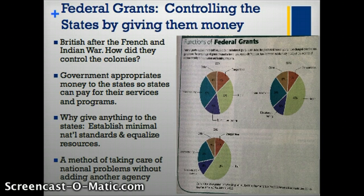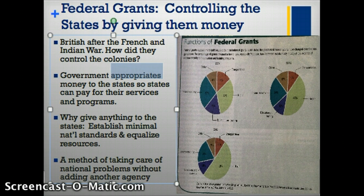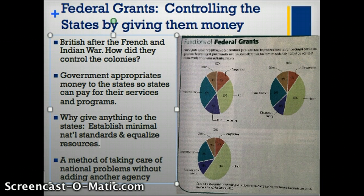The reason why government will give money to the states is because it is important that the government make sure states can pay for services and programs. The government appropriates — meaning gives out — money to the states so states can pay for their services and programs. It's important to give money to the states in order to make sure that every state can establish a minimal national standard and that we can equalize resources.